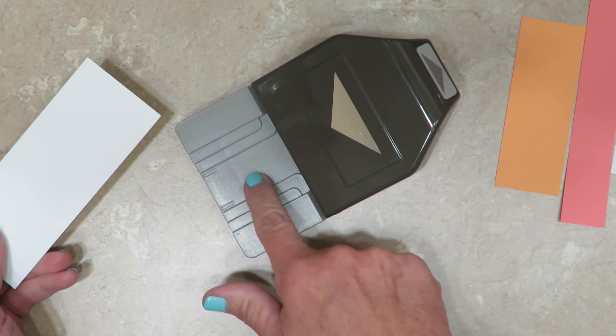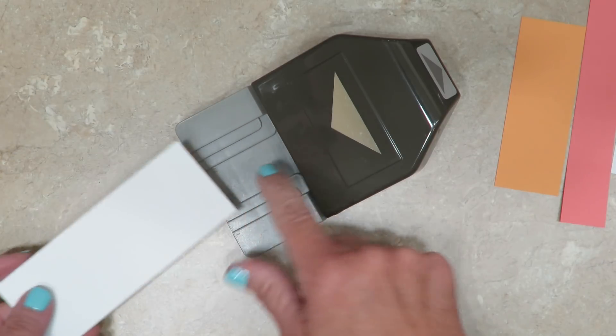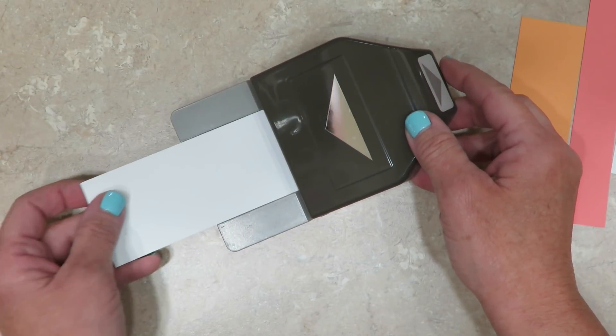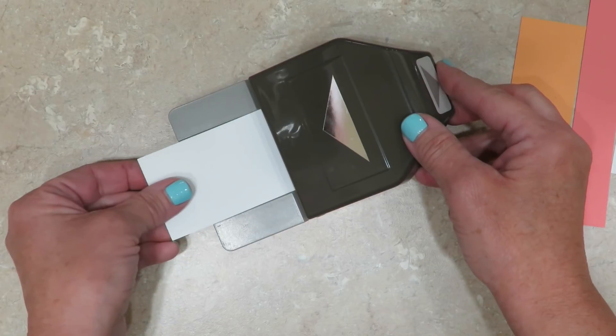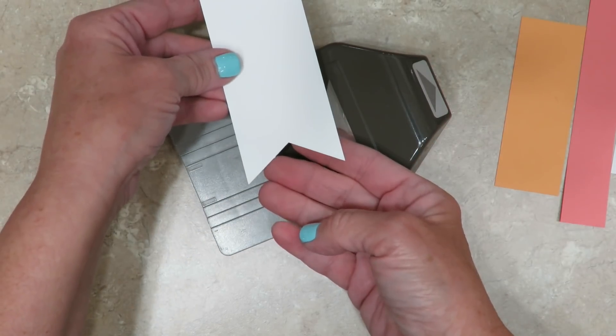There are grooves in here to delineate the different size of your paper. This is the two inch. You simply slide it right in all the way to the back of the punch and then press with the palm of your hand and you get a perfect banner tip.